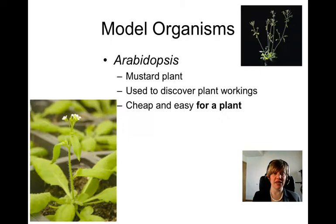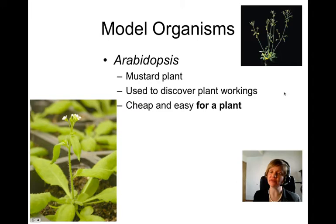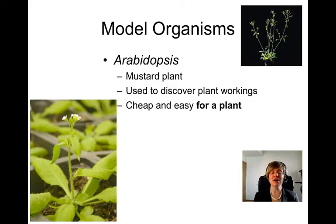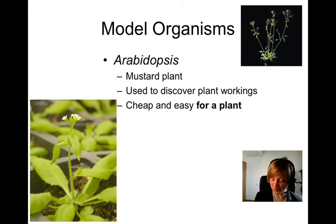Moving up in complexity, we have Arabidopsis, a simple mustard plant. This is the model organism most used when looking at plants — how do plants work, how do plant cells function? Much of what is known about that has been discovered in Arabidopsis. Compared to yeast and E. coli, Arabidopsis is more of a challenge to work with, but compared to other plants, it is very easy and cheap, which is why it's used.